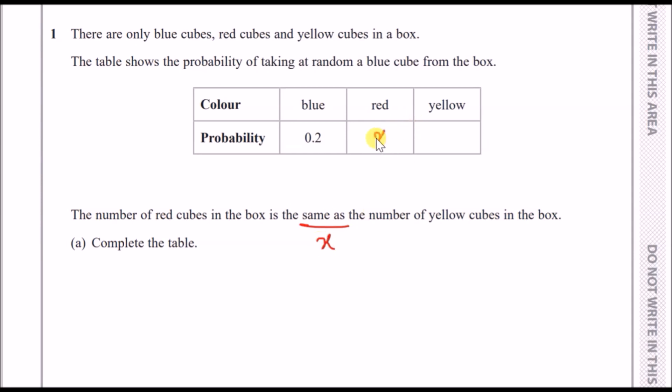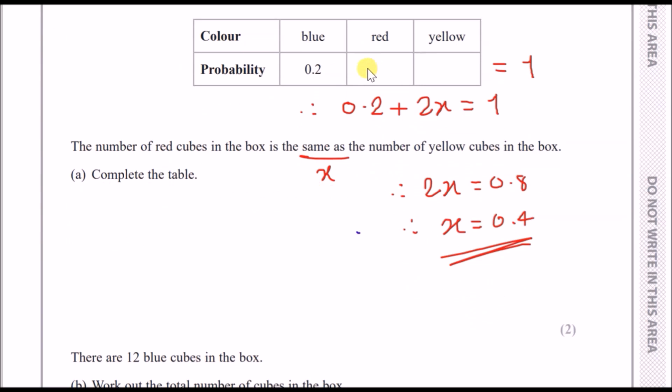I would label both red and yellow as x, and we know that all probabilities always add up to one. By default, summing all this up and making an equation equal to one will give you that. Now rearrange to make 2x the subject, subtract 0.2 across, and lastly just divide by two or halve it and you should get 0.4 for both red and yellow.